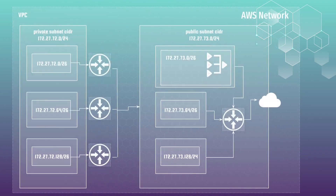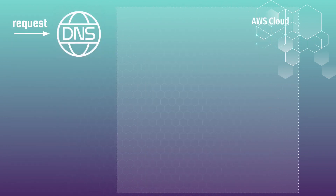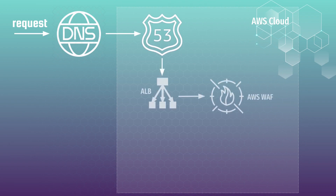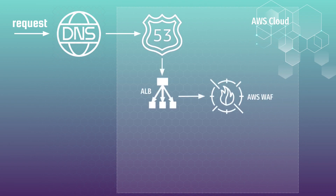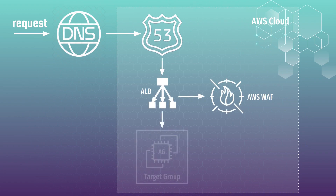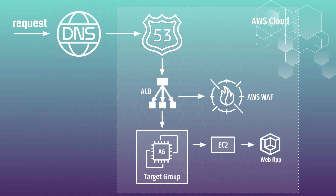First, we will prepare the AWS network. After that, we will configure Route 53 and an SSL certificate for our application. Then we will deploy an AWS Application Load Balancer with a WAF Web Application Firewall. And finally, at the last step, we will deploy our application on EC2 using an Autoscaling Group. This deployment pattern can be easily used in production, as it is rather cost-effective and nearly a high-available solution.